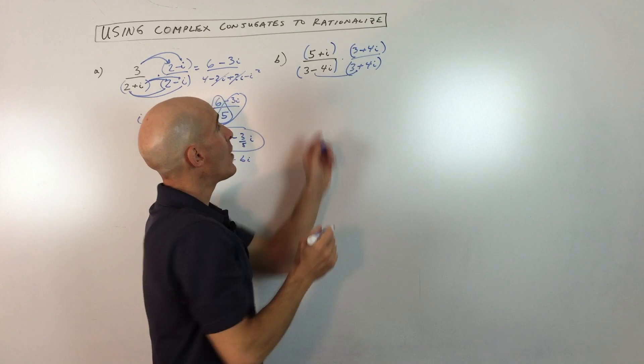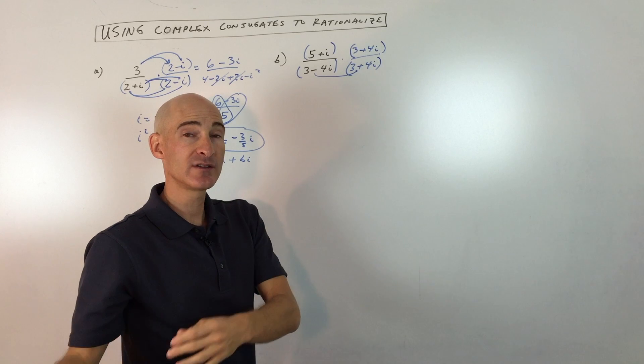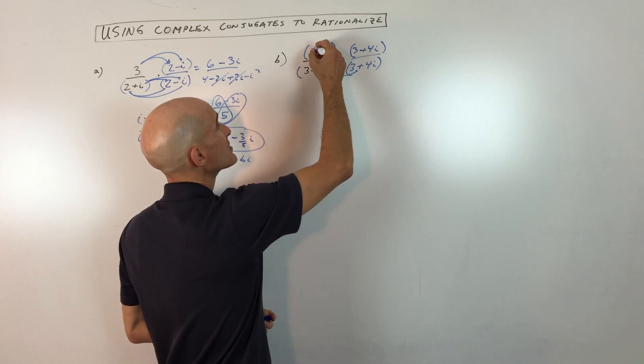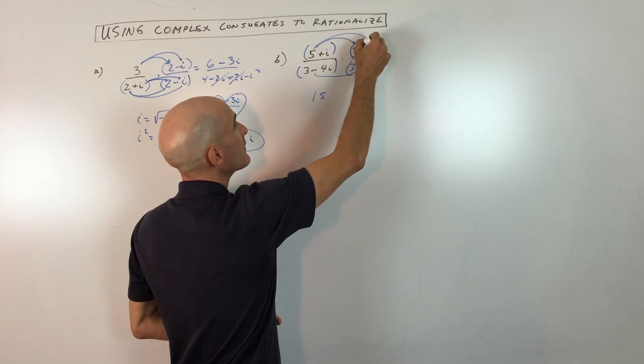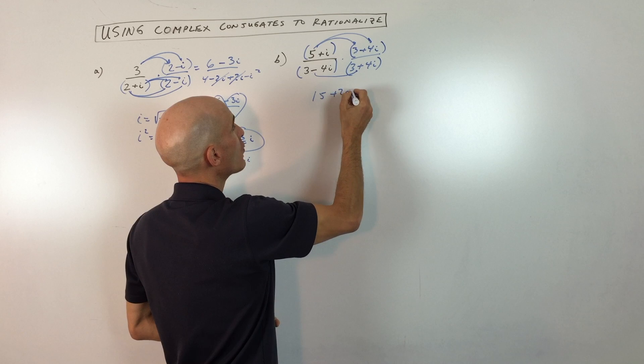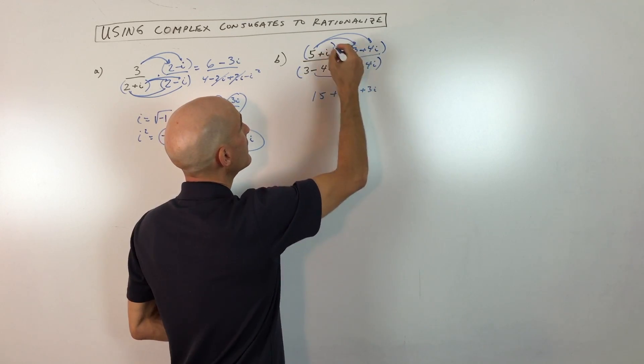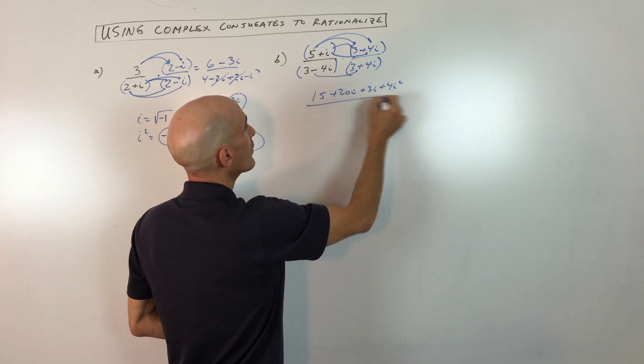Remember, you don't want to just make the mistake of multiplying the real parts and the imaginary parts. Because it's a binomial times a binomial, you want to foil or do the distributive property twice. So we've got five times three, which is 15, five times four i, which is 20i, i times three, which is three i, and then i times four i, which is four i squared.